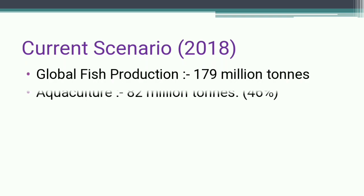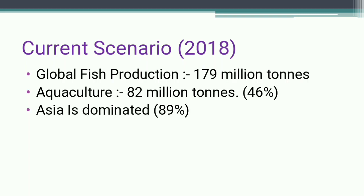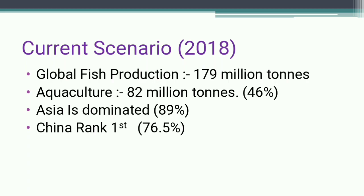Among total fish production, aquaculture contributes about 82 million tons, which is approximately 46%. Asia dominates with 89% of total fish production. Among Asian countries, China ranks first at 76.5% and India ranks second at 57.57%.